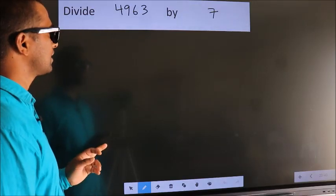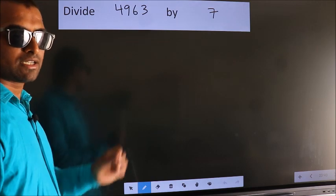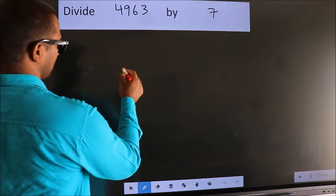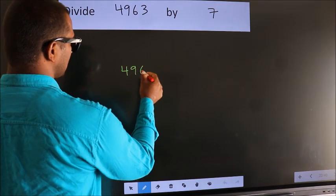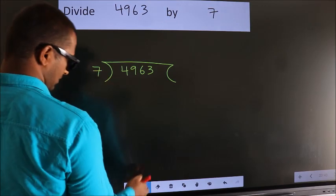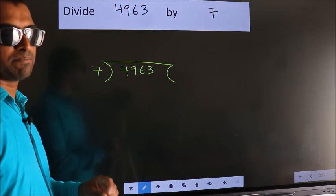Divide 4963 by 7. To do this division, we should frame it in this way. 4963 here, 7 here. This is your step 1.